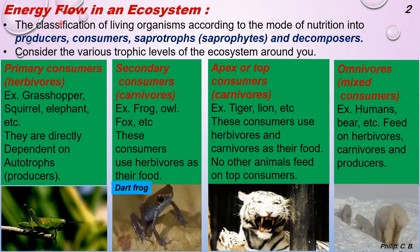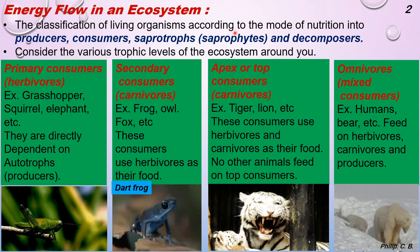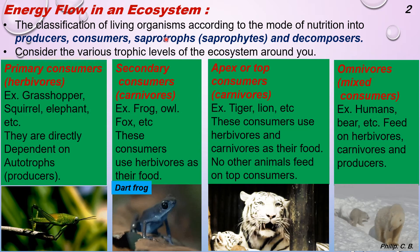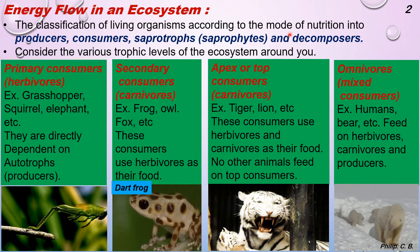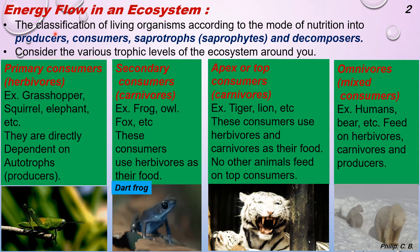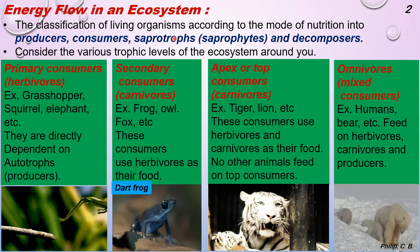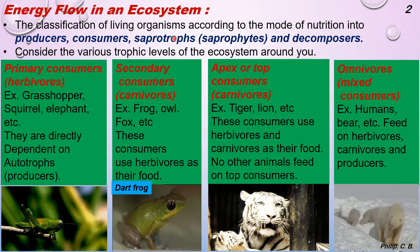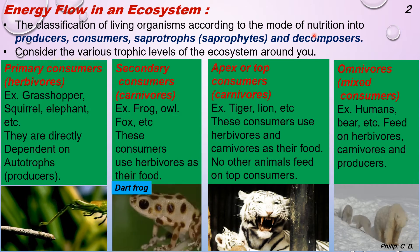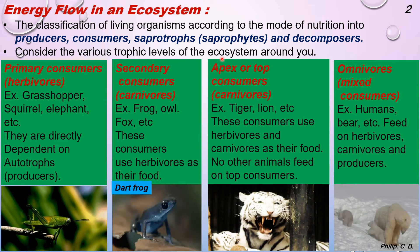Moving further to energy flow in an ecosystem. The first point is the classification of living organisms according to their mode of nutrition: producers, consumers, saprotrophs or saprophytes, and decomposers. Producers are plants which produce food by photosynthesis. Consumers are mainly animals which feed on plants. Saprotrophs are animals or species which feed on dead organisms. Decomposers are microorganisms which decompose plant or animal species.